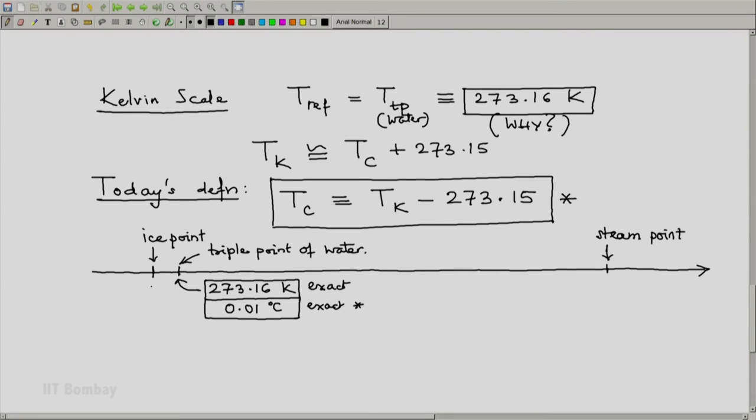Because of this, the ice point needs to be measured and it turns out to be, I will not write approximately, but because it is not in blocks and I am not going to write exact. This is approximately 273.15 Kelvin, which is approximately 0.00 degrees C.